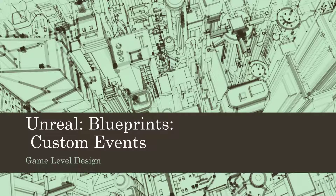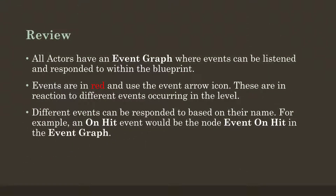Unreal Blueprints custom events. Let's review what we know so far. We know that all Actors have an event graph. We know when we create a Blueprint, a subclass of an existing Actor, we can listen for various events using the event graph, and respond to them. Because Blueprints is a visual scripting language, all events are in red and have the event arrow icon next to them.